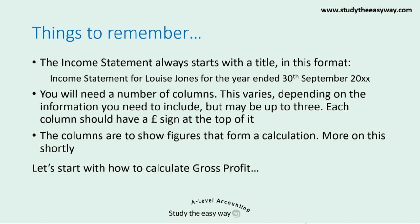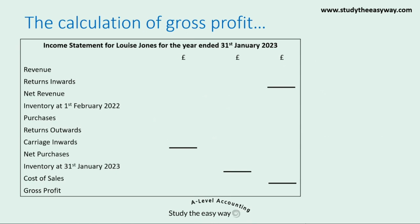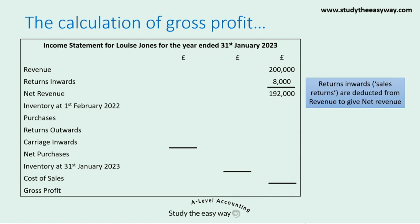So let's start with how to calculate gross profit. This is an example of an income statement and I'll be using real numbers here so you can see exactly how the calculations work — they're just made up numbers to demonstrate. We start off with revenue, which is shown in the right hand column. Then we show returns inwards — these used to be called sales returns. The returns inwards are deducted from the revenue figure to give a calculated figure labelled as net revenue. Notice that these figures are all shown in the right hand column.